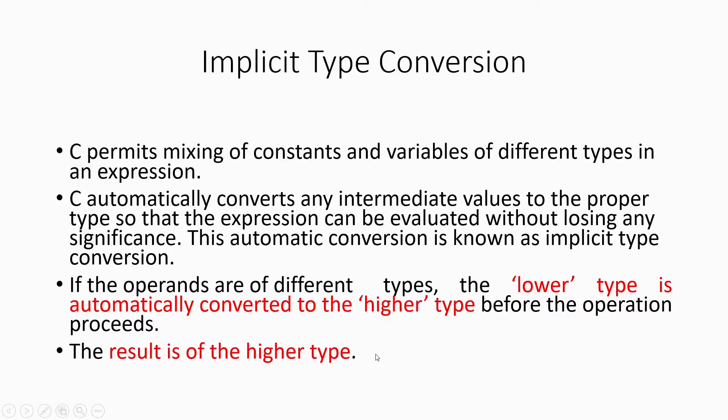If two operands are of different data types, the lower is converted to the higher type, because the expression should be evaluated without losing the value. If the higher is converted to a lower data type, some data will be lost. For example, if int 3 is converted to float, it becomes 3.000 — no data lost. But if float 3.235 is converted to int, 0.235 will be lost, so information is lost when converting to a lower data type.